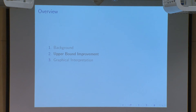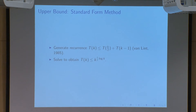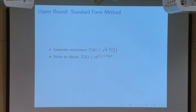Now I'm going to present a few improvements, both conditional and unconditional, which I've made to the upper bound on maximal size tournament codes. In 1985, Van Lint used the standard form method to generate a recurrence, and by solving it he achieved the upper bound of k to the one-half times log base two of k. In my work here at RSI, I've slightly improved the recurrence to T(k) ≤ √k · T(k/2), and with this I've been able to show that T(k) is at most some constant times k to the one-fourth plus epsilon, times log base two of k.